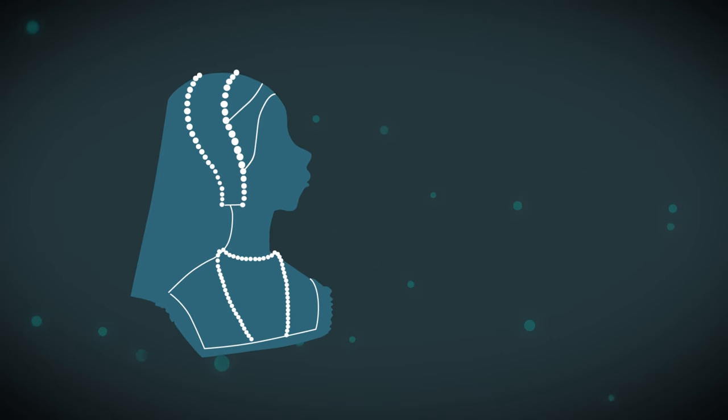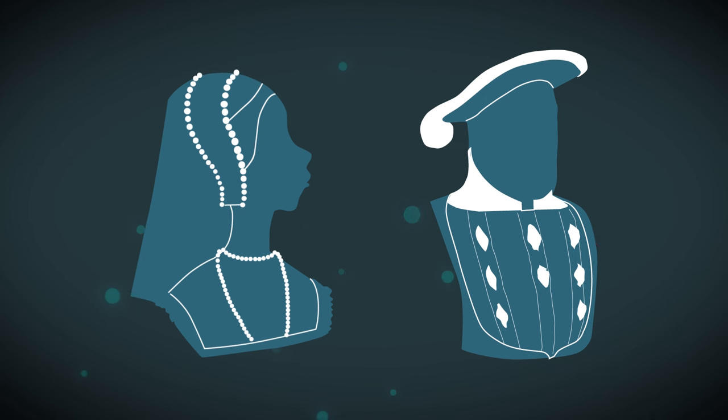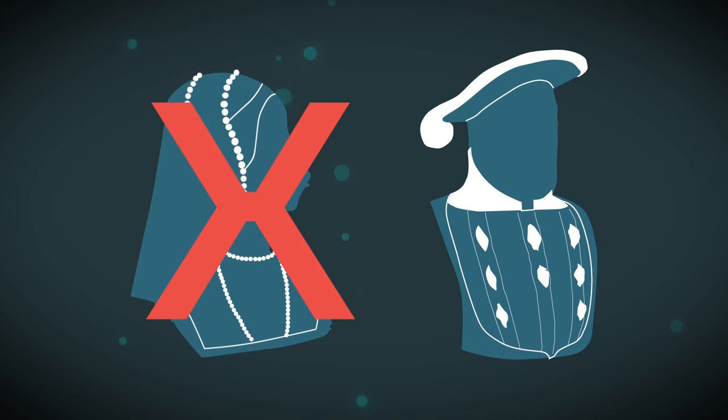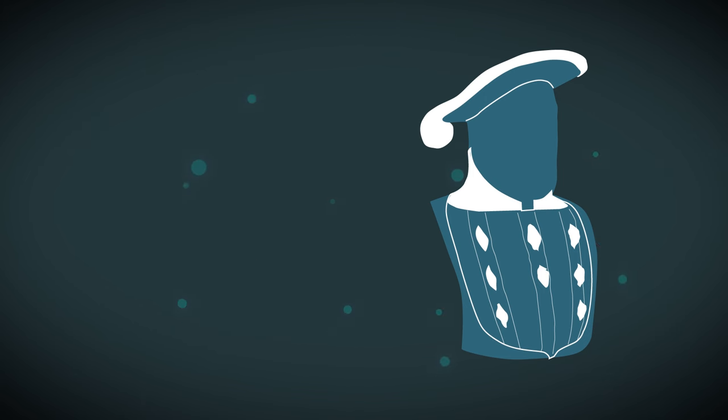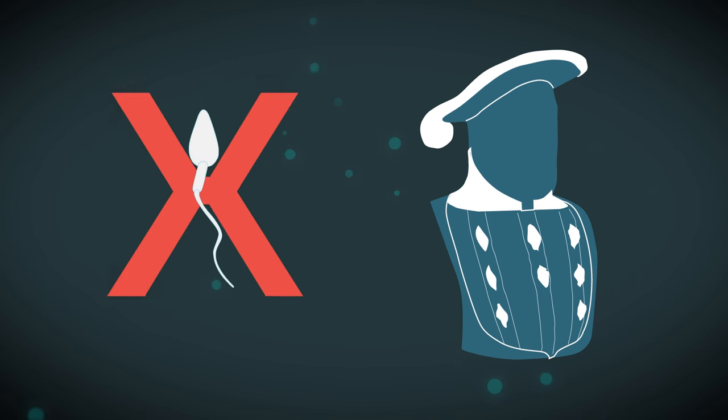Unfortunately for Anne Boleyn, a wife of King Henry VIII of England in the 16th century, she was executed for not providing a male heir to the throne when really his sperm were to blame.